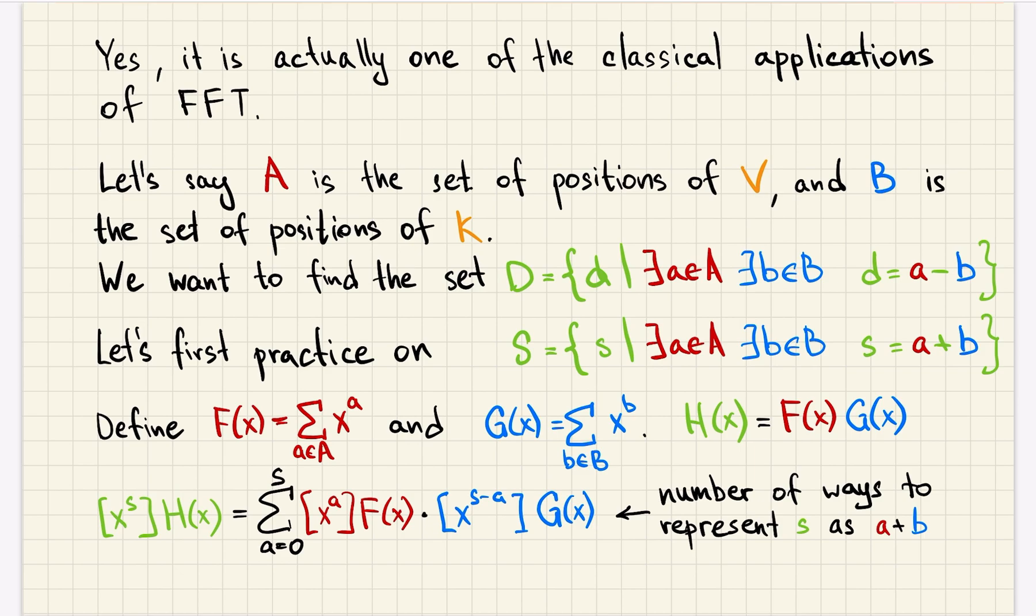Since coefficients of f and g are zero if we don't have that power in our set and one if we do have, this product can be one if and only if we have a in set a and s minus a in set b.